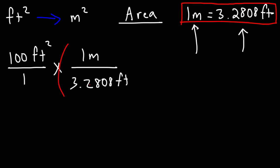So now let's square the conversion factor. So this is going to be 100 square feet. Let's put our equal sign over 1. And then we're going to have 1 square meter on top. And on the bottom, if we take 3.2808 and square it, we're going to get the same number we had before, 10.76365 square feet.